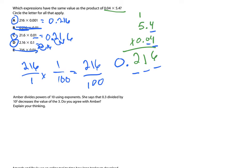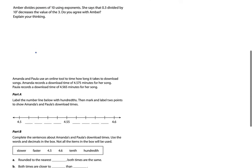Next question: Amber divides a power of 10 using exponents. She says that 3 tenths divided by 100 decreases the value of 3. Do you agree with Amber? Explain your thinking. I already turned this into the form — 10 to the second power is 100 — so the first thing you should do is write out the problem: 3 tenths divided by 100 equals something. This problem is actually not asking us to solve it; we just have to say: does it decrease the value of the 3?